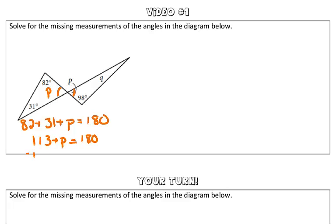To get P by itself, we're going to use inverse operations. So subtract 113 from both sides. So we get P is equal to 67 degrees.